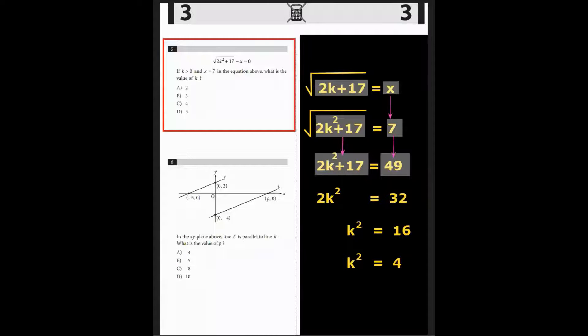Question 5. The square root of 2k squared plus 17 minus x equals 0. If k is greater than 0 and x equals 7 in the equation above, what is the value of k?